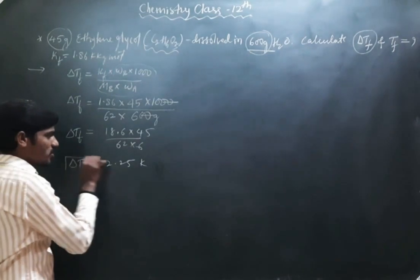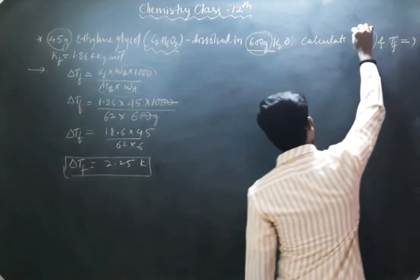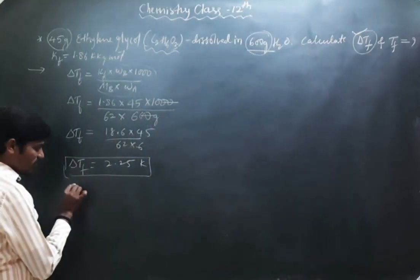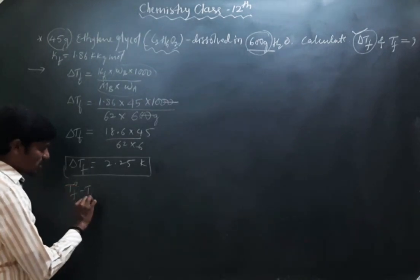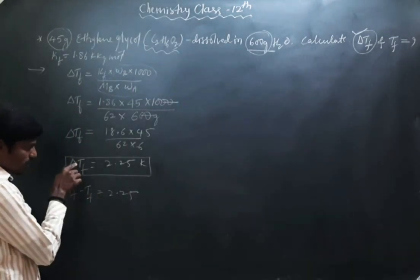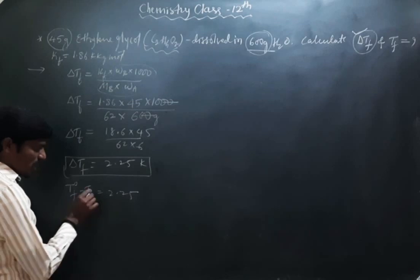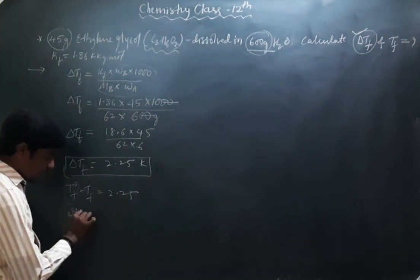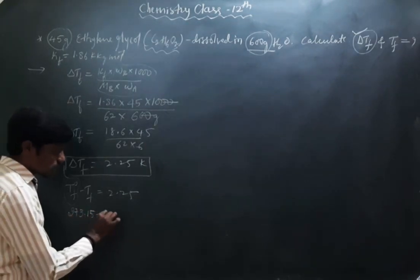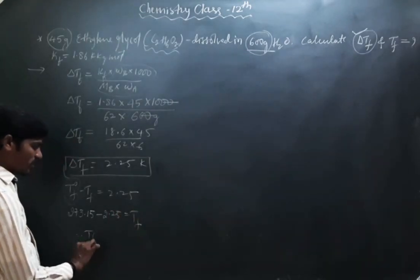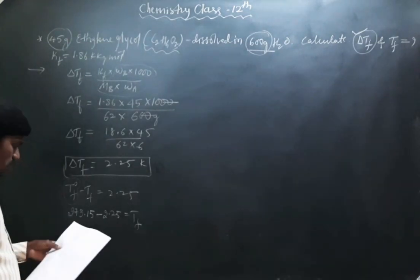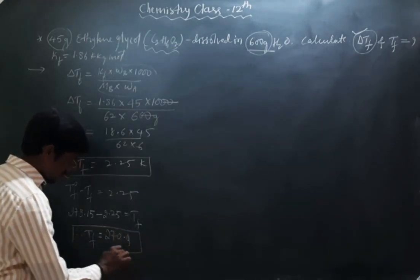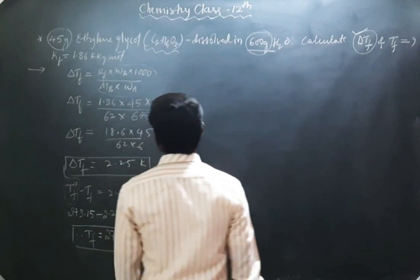Now for the freezing point of the solution: since ΔTf = T₀f minus Tf = 2.25, we have 273.15 minus Tf = 2.25. Therefore, the freezing point of solution Tf = 273.15 − 2.25 = 270.9 K. This is the freezing point of the solution.